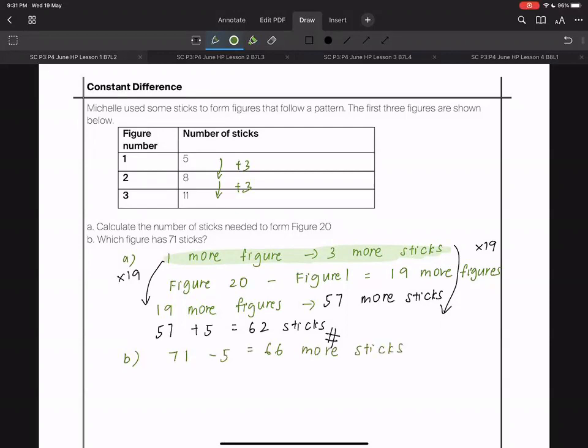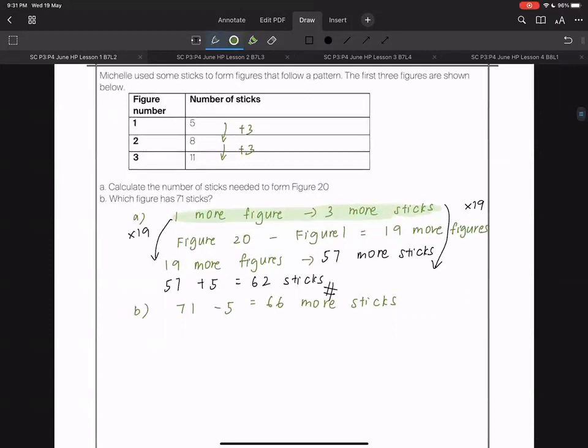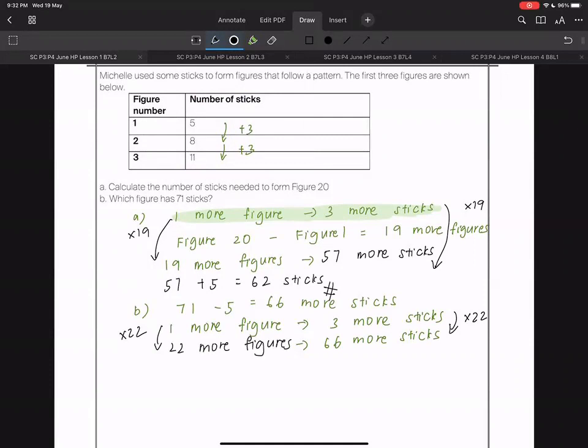66 more sticks. So if one more figure is three more sticks, 66 more sticks will give us how many more figures? 66 divide by three, that's 22 more figures from figure one.